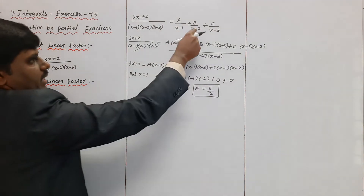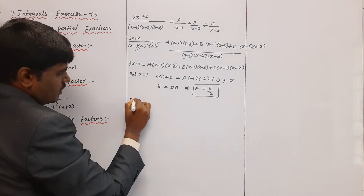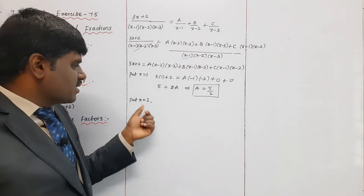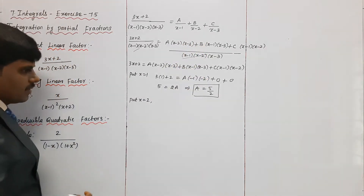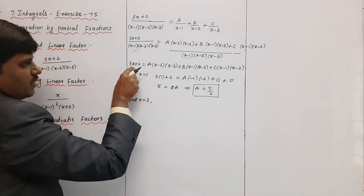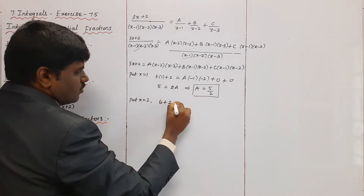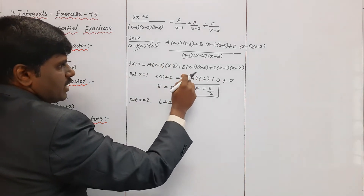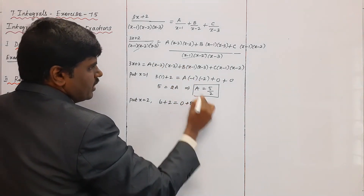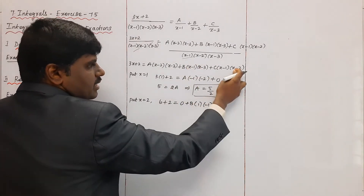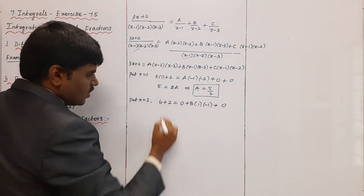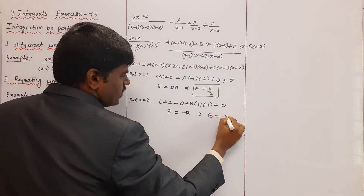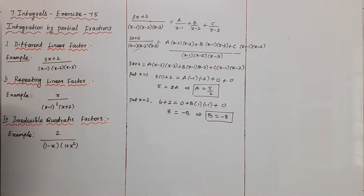Next, substitute x = 2: the left side gives 3(2) + 2 = 8. The A and C terms become zero. So 8 = B(2−1)(2−3) = B(1)(−1) = −B, therefore B = −8.